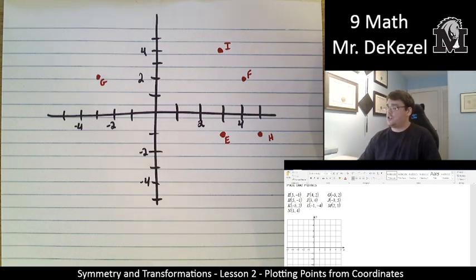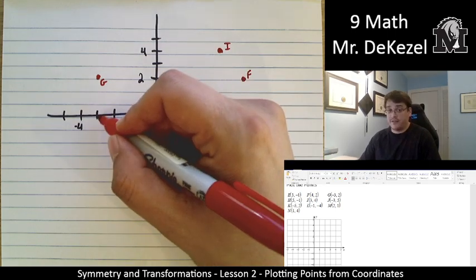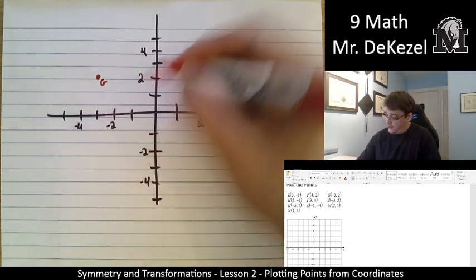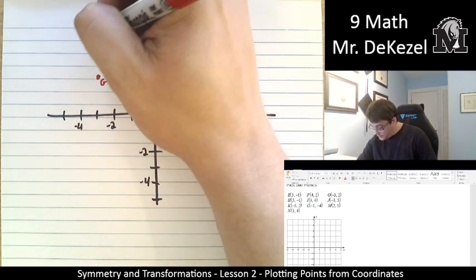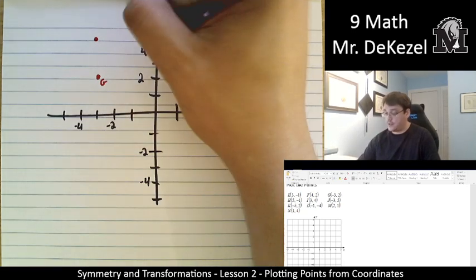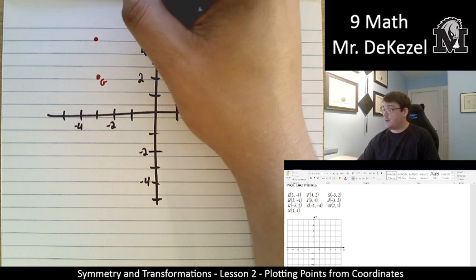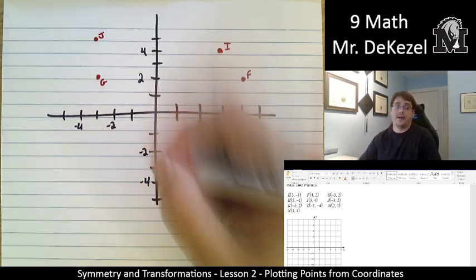We'll do our next one, J. J is minus 3 and 5. So 1, 2, 3 to the left. And then up 5 all the way to the top. That's right about there. We're going to call it. And I said that was point J. Very nice.